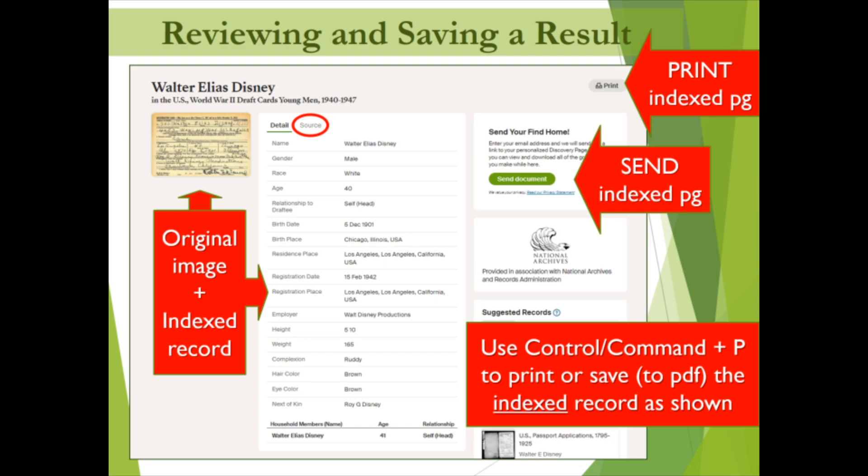Number two: the source citation tab, circled here at the top, lets us know the owner of the original record — in this case, the National Archives and Records Administration, or NARA. If the image was not available to view immediately, we might be able to use this source citation to locate the original for viewing elsewhere. Number three: if you decide you want to keep this result, you can save the indexed record by clicking on the green Send Document button, which sends this record to the email you provide. You can also print the indexed record using your computer's print function (Ctrl-P, or Command-P for Macs), or print to PDF to save it electronically.